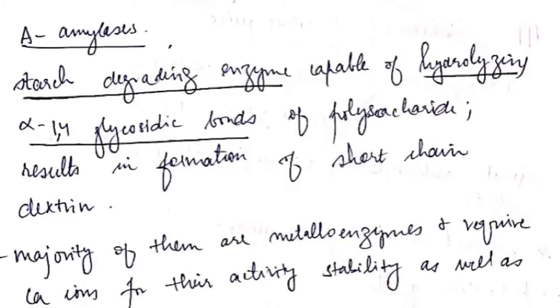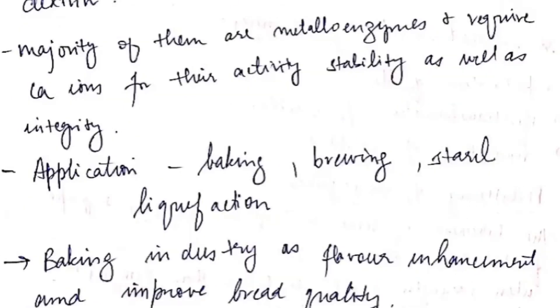The next enzyme is amylase. Amylase is a starch-degrading enzyme which is capable of hydrolyzing alpha-1,4 glycosidic bonds of polysaccharides. It results in the formation of short-chain dextrin.